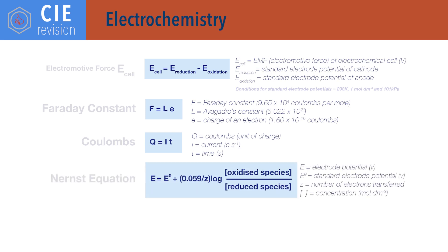E equals E standard plus 0.059 divided by z times log of concentration of oxidised species divided by concentration of reduced species, where E is electrode potential, E standard is standard electrode potential, z is the number of electrons transferred, and concentration is given in moles per decimetre cubed. This is the Nernst equation.